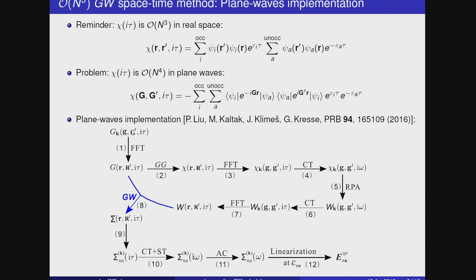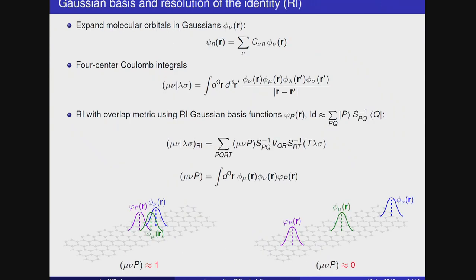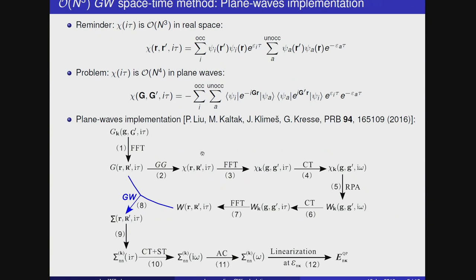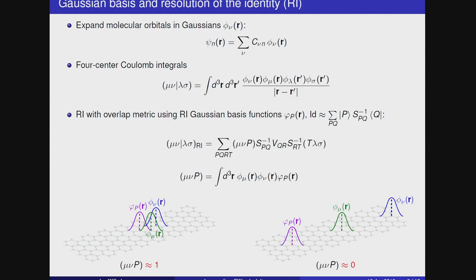Recently, this GW space-time method has been implemented in VASP. And they use also real space grids for the Green's function. They compute it on a real space grid and do Fourier transform back to get chi in plane waves. But the problem is that real space grids are not an optimal way for representing electronic structure calculations. Therefore, it could be maybe better to find a better localized basis for chi, which is local, a local basis and still efficient. And this could be maybe done by a Gaussian basis set. Here all molecular orbital wave functions are expanded in a Gaussian basis. These are atom-centered functions.